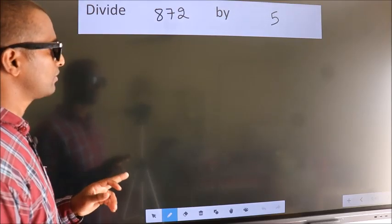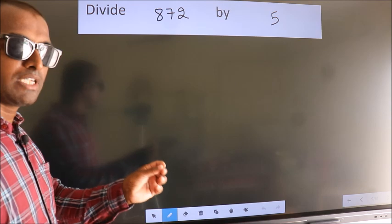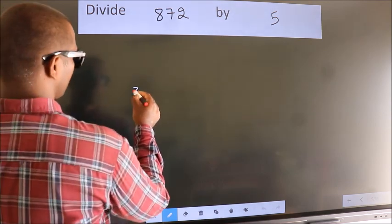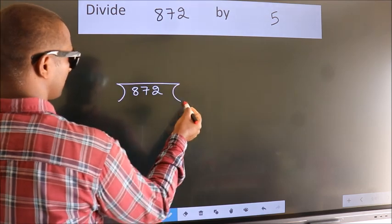Divide 872 by 5. To do this division, we should frame it in this way: 872 here, 5 here.